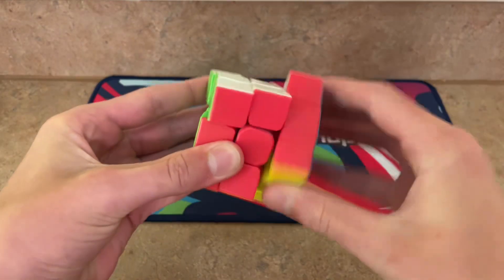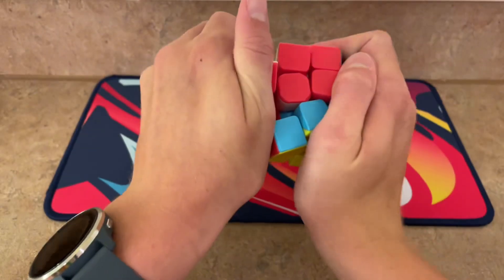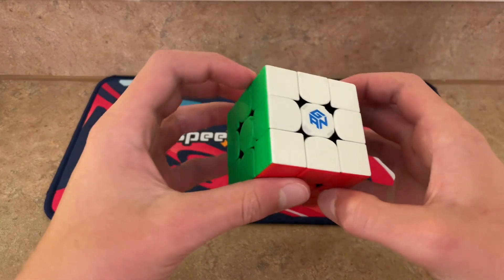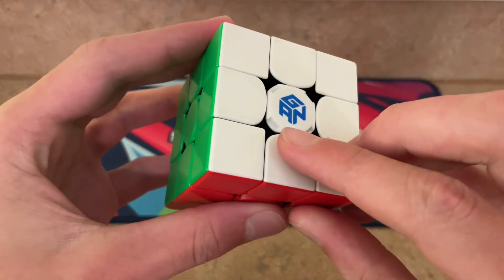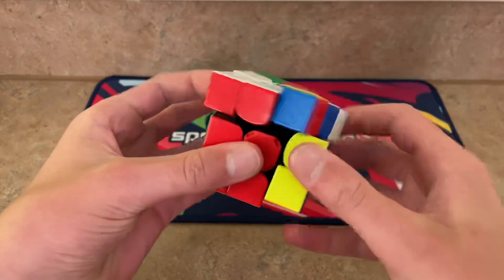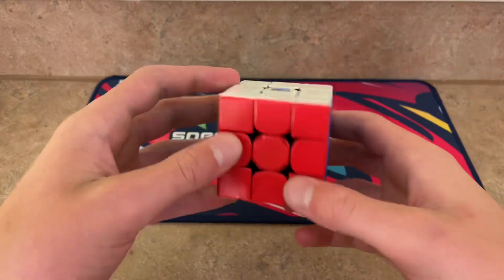This is my worst cube. It turns super badly and can pop really easily. This is the Gan 356 XS. The center pieces are swapped with the Ganite 3, so that's why they have the little grooves. It turns really badly because it was left in the sprinklers. I'm just gonna let you guess how.